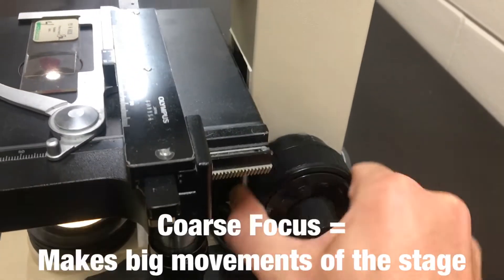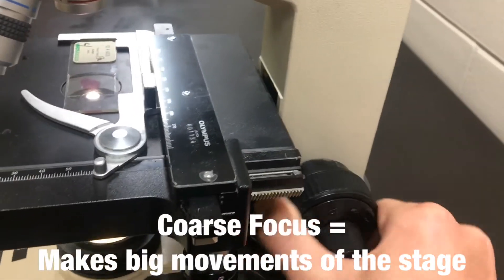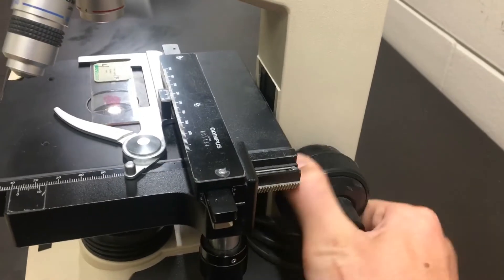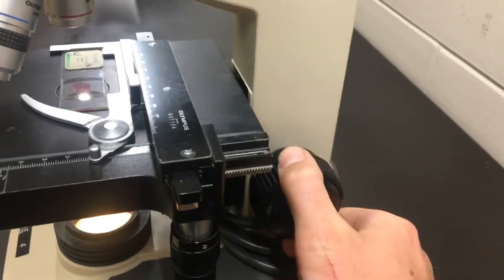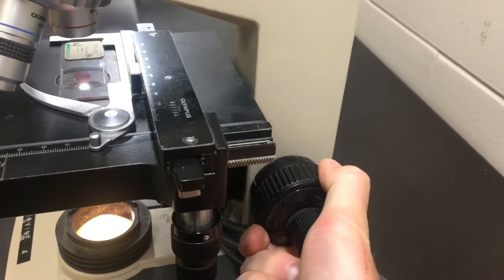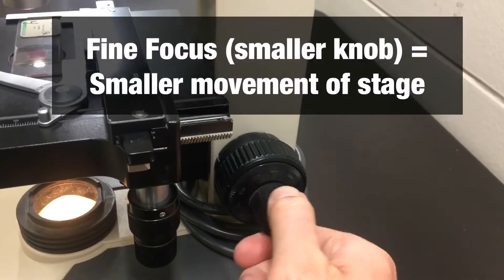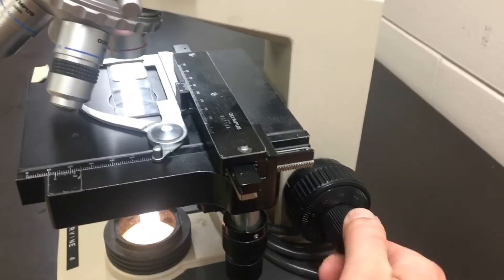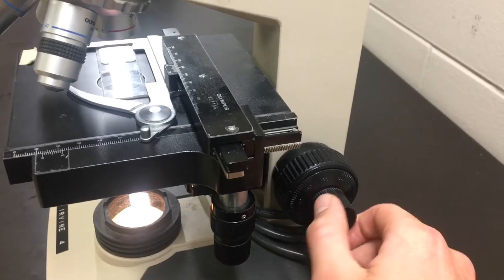The other thing to mention on the side here, two different types of focus. The coarse focus, which is this big knob, makes the stage move up and down a lot. But once you've got it in a pretty good position, the smaller knob will do the same thing, but it's the fine focus. So it does it on a much smaller scale.